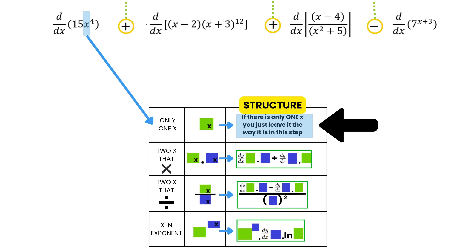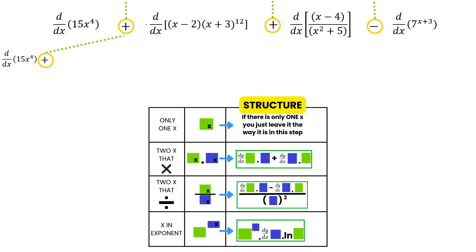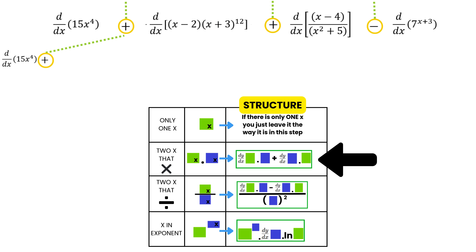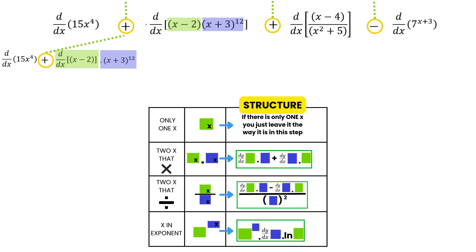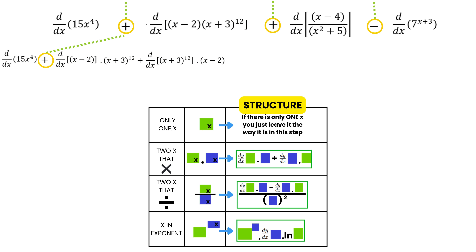For our second term we can see we have two x's being multiplied, so this is the structure we need to set up. Look carefully at how the structure works: we differentiate the first bracket and multiply it by the second bracket as is, then we add, and now we differentiate the second bracket and multiply it by the first bracket just as it is. Remember, this structure always stays the same whenever we have two x's being multiplied.